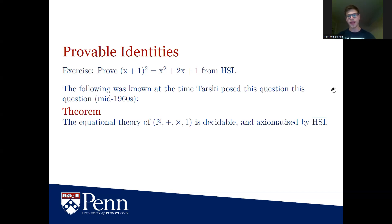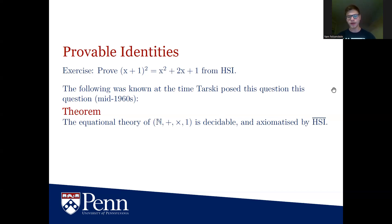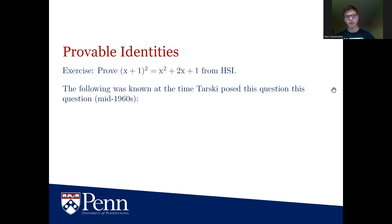The following was known in the mid-1960s when Tarski posed this question. The equational theory of N — the positive integers — with addition and multiplication is decidable and axiomatized by the reduced high school identities. Decidable means we have an algorithm that can, in finite time, determine if any equation involving addition, multiplication, and the number 1 is valid. Axiomatized by the reduced HSI means any valid equation using only addition, multiplication, and the constant 1 can be derived from identities 1 through 6.